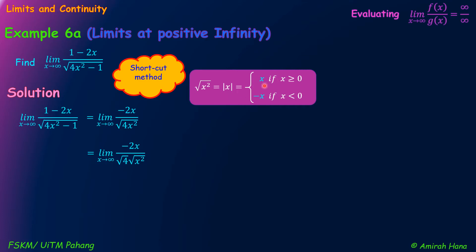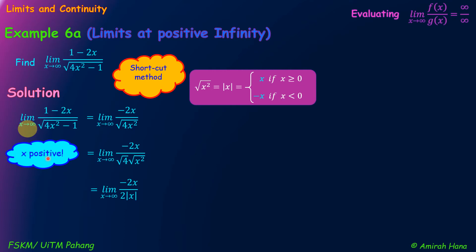Modulus x can be positive x or negative x, depending on the value of x. From here, it equals the limit as x approaches infinity of negative 2x over 2 times modulus x. Since the square root of 4 is a perfect square, it equals 2. Since we have the limit as x approaches positive infinity, x is a positive value — in other words, x is greater than or equal to 0. So we can replace modulus x with positive x.